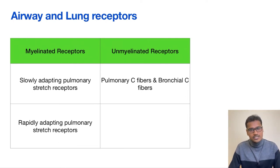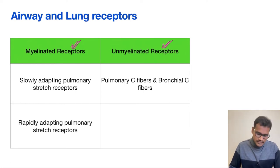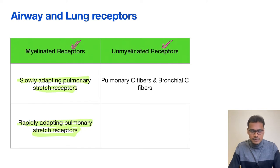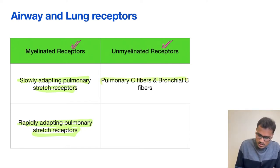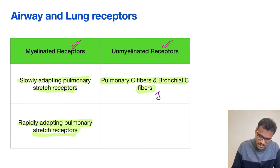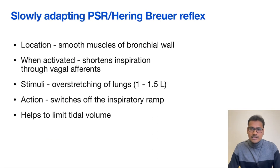In airway and lung receptors there are two kinds of groups: the myelinated receptors and the unmyelinated receptors. The myelinated receptors are further classified into slowly adapting pulmonary stretch receptors and rapidly adapting pulmonary stretch receptors. The third group is called pulmonary C fibers and bronchial C fibers, which are also called J receptors.